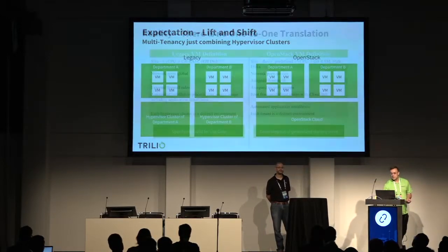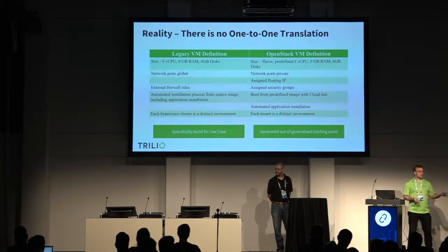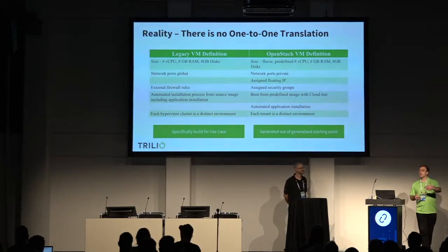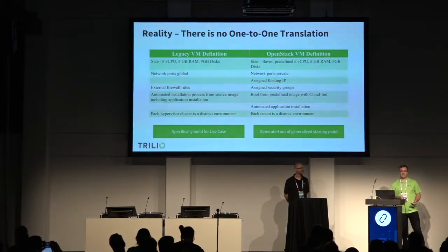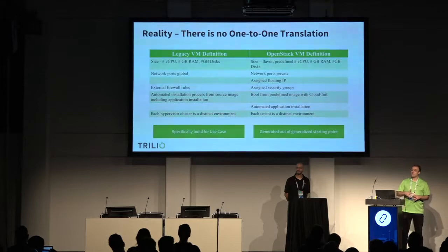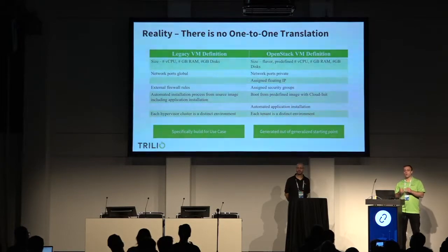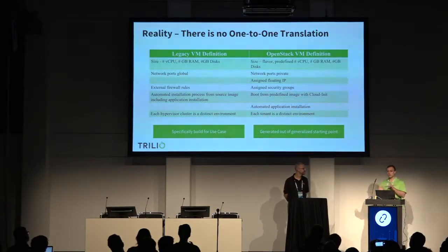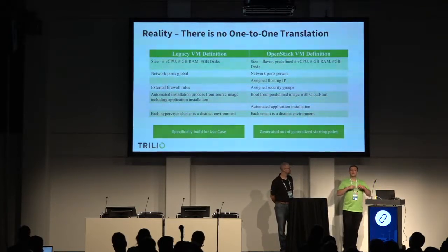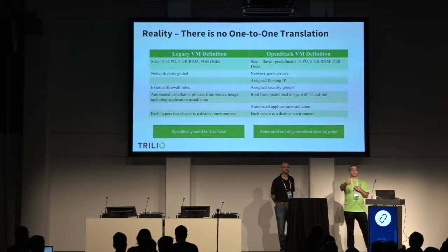There is no one-to-one translation. When you look at how a virtual machine is defined in the legacy world, the administrator specifically refines the size of the virtual machine for the use case, creates ports, and assigns them to correct networks. In OpenStack, on the other hand, you have flavors, public networks, and private networks — these are generalized use cases from which you start and then move toward your specialized use case.